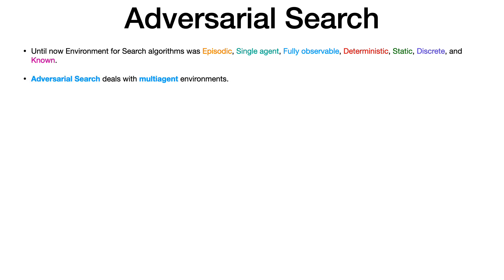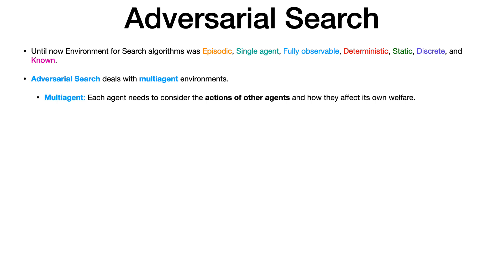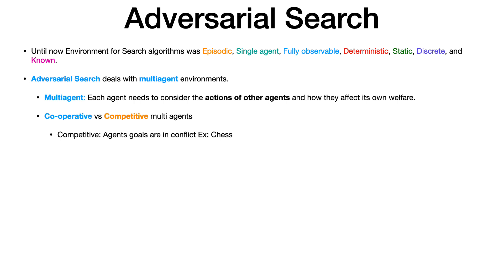If we replace the single agent with multi-agent, we need different techniques. Adversarial search algorithms deal with multi-agent environments, where each agent must consider how opponent agents might affect its own welfare. Agents can be competitive or cooperative. If competitive, it is a zero-sum game — one agent's win is the other's loss, as in chess.